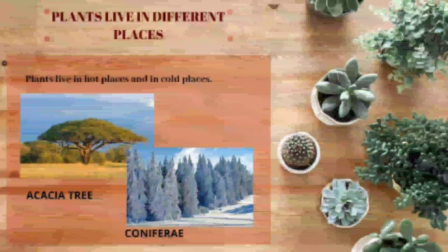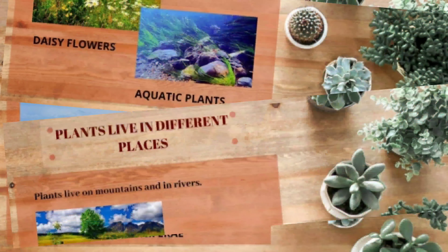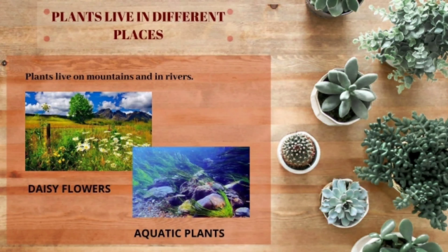Acacia tree lives in hot places like savannah forest. You can see a picture of savannah on the screen. While conifers live in cold places. Kids, you can find daisy flowers on mountains, and aquatic plants in rivers.